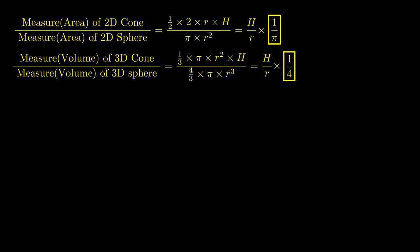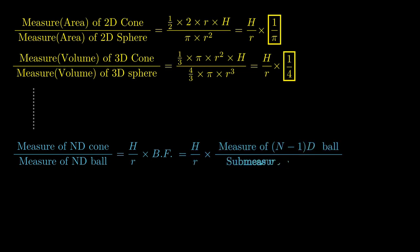Does that sound like it could be generalized? In fact, it is provable that for N dimensions, the measure of ND cone to the measure of ND sphere can be generalized to h by r times a dimension-dependent constant called ball factor. And ball factor can be calculated using the relationship: measure of N-1 dimensional ball divided by sub-measure of ND ball. Sub-measure here has been used to define the N-1 depth measurement of the ND shape.